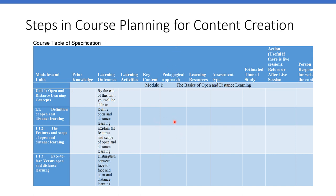For pedagogy, choose what best fits — for example, you may want to use transmissive: you have a recorded video or a text for the learners to read about open and distance learning. Then come the resources — what resources would they require. For assessment, sometimes you may want to use formative assessment such as self-assessment exercises. Then determine the method: drag and drop or multiple choice, and specify how many items. Put the estimated time in here.